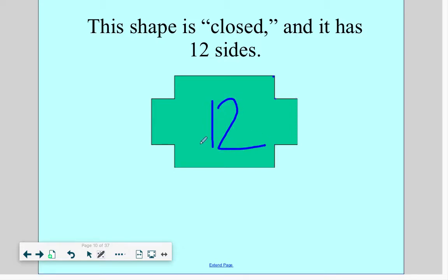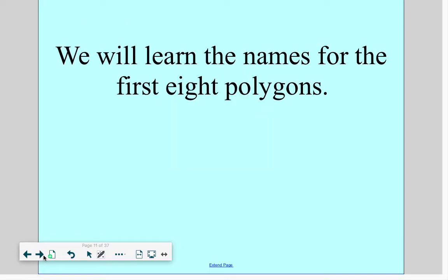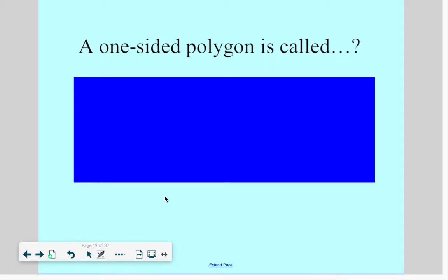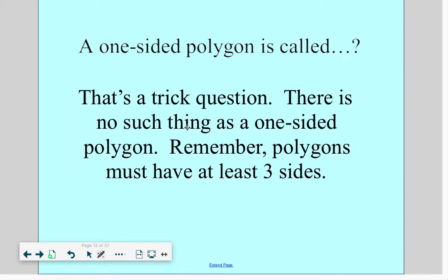Now, we don't have to know the names of this 12 sided figure. Let's look at some shapes that we do need to know the names for. All right. So we have eight names to learn. Remember, learn the prefixes. The prefixes will help you. What's a one-sided polygon called? Well, guys, that's a trick question because there is no such thing as a one-sided polygon. Remember, polygons must have at least three sides in order to be a polygon.